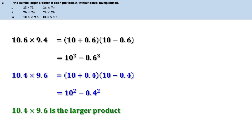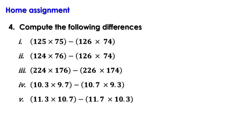Today we have done some problems using the identity a + b into a - b = a² - b². Now there is a homework: compute the following differences: (1) 125×75 - 126×74, (2) 124×76 - 126×74, (3) 224×176 - 226×174, (4) 10.3×9.7 - 10.7×9.3, (5) 11.3×10.7 - 11.7×10.3. We shall discuss the remaining problems in the next video. Till then, bye.